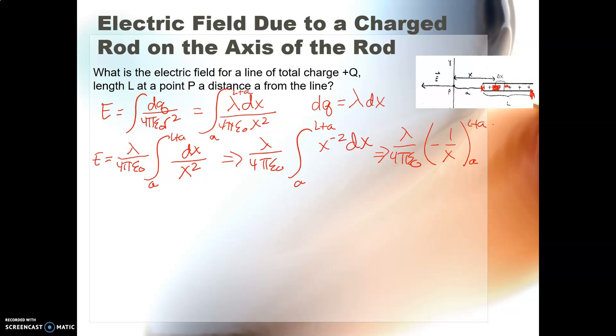So now I just have to put in my limits here. So my electric field is equal to λ over 4πε₀. And then we have a negative 1 over L plus a minus a negative, so plus 1 over a. Now, if I had a limit on time, like this was an AP exam, I probably would stop here. But we're going to simplify this because we have time, right?